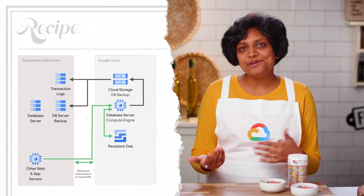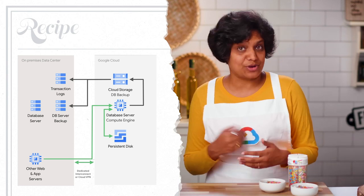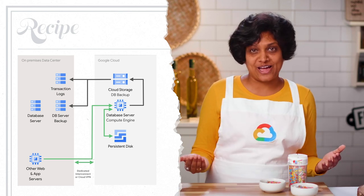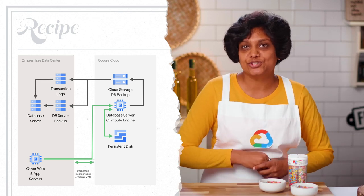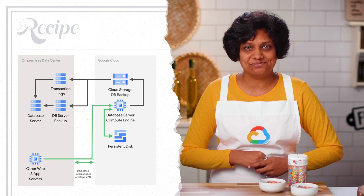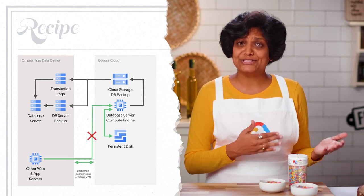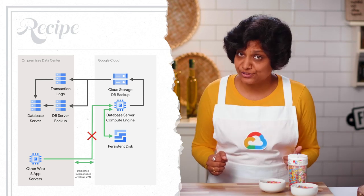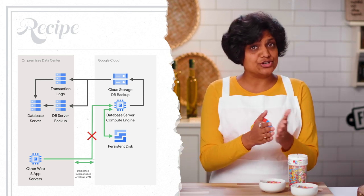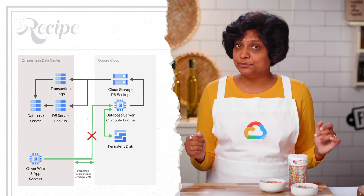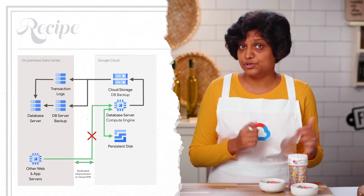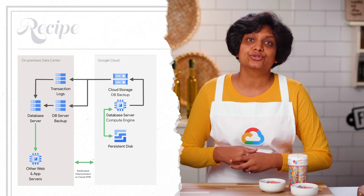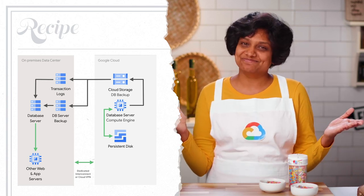Take a backup of the database and transaction logs running on Google Cloud. Copy these backup files to the production environment and apply them to the production database system. Prevent clients from connecting to the database system in Google Cloud by stopping the database service. From this point, the application will be unavailable until they finish restoring the production environment. And finally, redirect the client connections to the production environment.